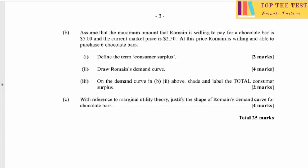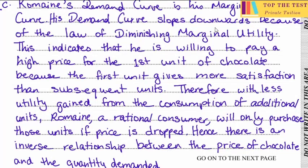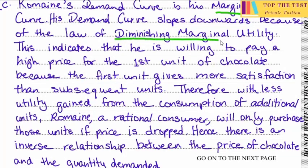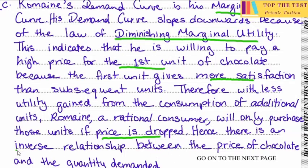The last part asks us to justify the shape of Romaine's demand curve using marginal utility theory. His demand curve slopes downward because of the law of diminishing marginal utility — he's willing to pay a high price for the first unit because it gives more satisfaction than subsequent units. With less utility from additional units, a rational consumer will only purchase more if the price drops, hence an inverse relationship between price and quantity demanded.